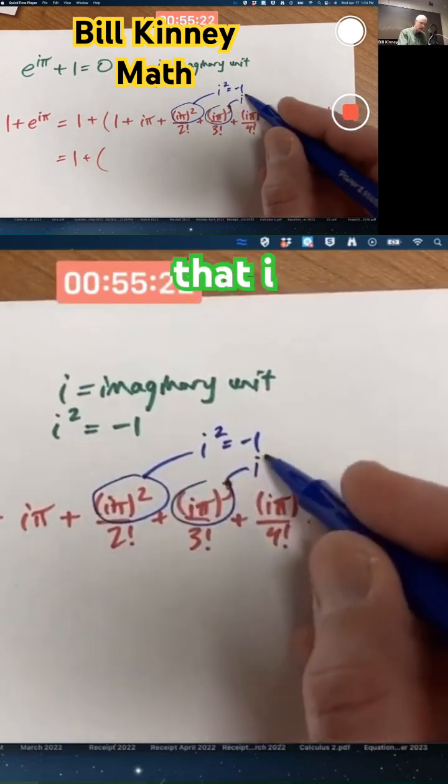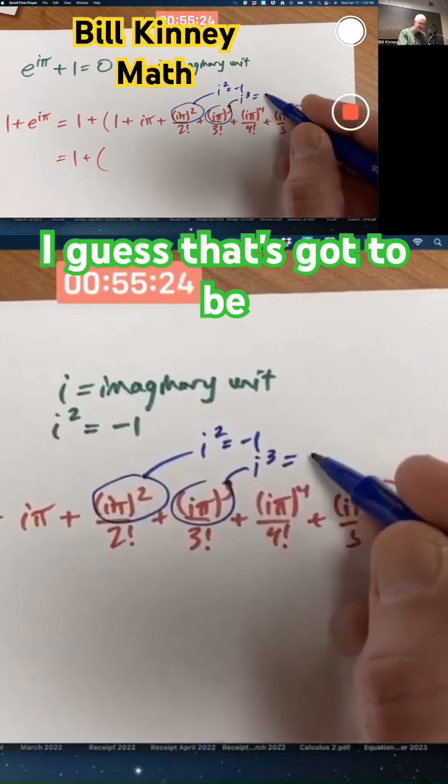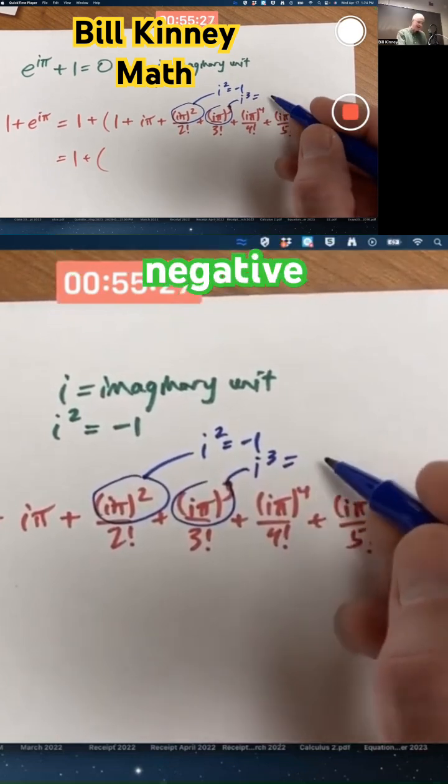In this one, we'll use the fact that i cubed is, well, I guess that's got to be negative 1 times i. Yeah, negative i.